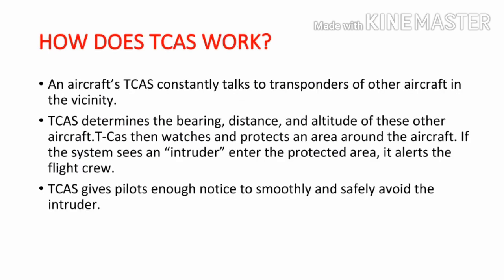How does TCAS work? An aircraft's TCAS constantly talks to transponders of other aircraft in the vicinity. TCAS determines the bearing, distance, and altitude of these other aircraft. TCAS then watches and protects an area around the aircraft. If the system sees an intruder enter the protected area, it alerts the flight crew.